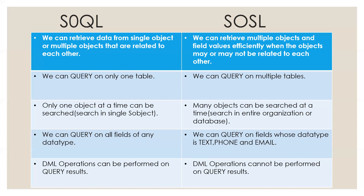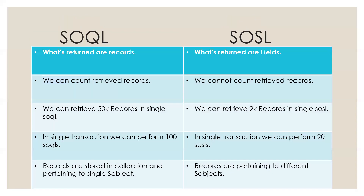DML operations can be performed on Sokol query results, but DML operations cannot be performed on Soso query results. What's returned by Sokol are records; what's returned by Soso are files. We can count retrieved records in Sokol, but we cannot count retrieved records in Soso. Governor limits for Sokol: we can retrieve 50,000 records in a single Sokol query, and in a single transaction we can perform 100 Sokol queries. For Soso, we can retrieve 2,000 records in a single Soso query, and in a single transaction we can perform 20 Soso queries.